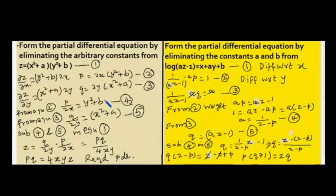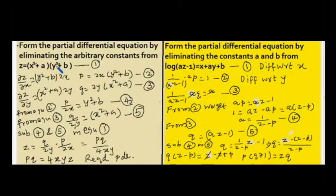Students, here we have been given two problems to form the partial differential equations. The first problem is: form the partial differential equation by eliminating the arbitrary constants from z equal to (x squared plus a) into (y squared plus b). We already know that if we have two arbitrary constants, to form the partial differential equation we require at least three equations. Let us take the given equation as equation number one.